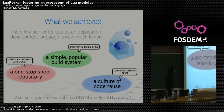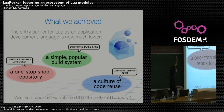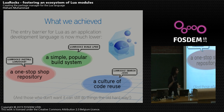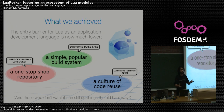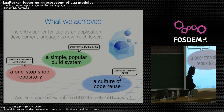So now what have we achieved? Well, now we do have a one-stop shop repository — instead of 'get it from my site,' people just go and do LuaRocks install. We do have a simple and popular build system which covers about 75% of cases. And in other cases you can still use your complex makefile rules with LuaRocks build. And we started to have a better culture of code reuse — now you can go and LuaRocks search JSON and see what are your options, instead of just trying to hack your own. And of course, for those who don't want it, they can still do things the old hard way.